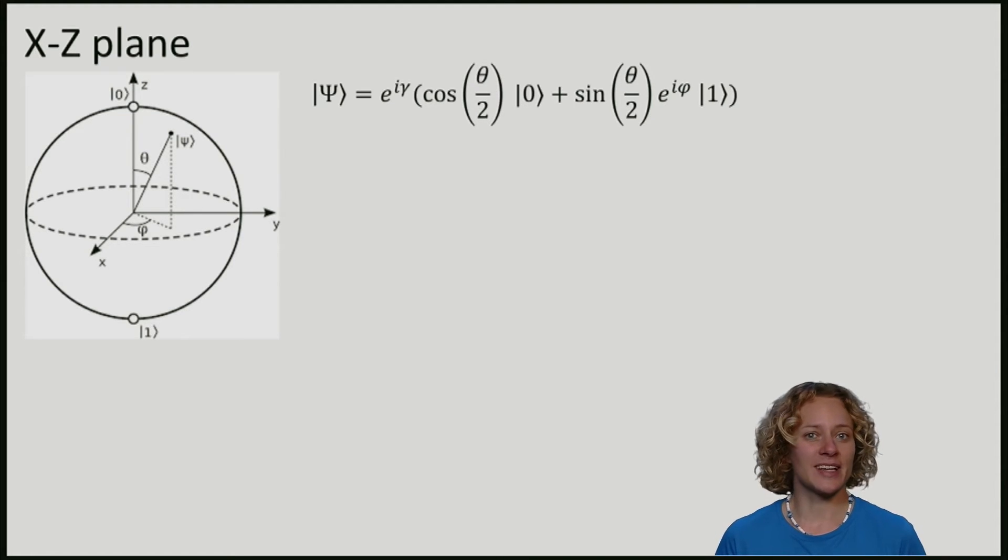If we say that the qubit is in the x-z plane, it means that we are precisely in the case where phi is equal to 0 and we again ignore the global phase.